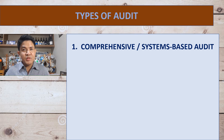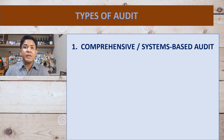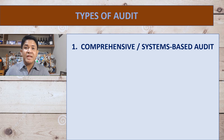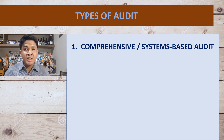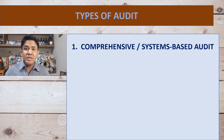Now that we have discussed the objectives and the benefits which can be derived from post-clearance audit, we now continue discussing the different types of audit. Under the WCO guidelines for post-clearance audit, there are three types of audit. First is the comprehensive or systems-based audit. Second is the focused or issue-based audit. And the third is the post-importation transaction-based audit.